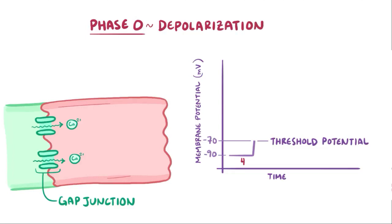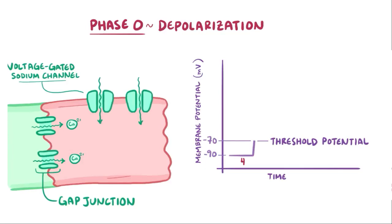Phase 0 is known as the depolarization phase. Basically, some voltage-gated sodium channels open up when they sense that the membrane potential is negative 70 millivolts, and they allow sodium to rush into the cell, creating an inward current. This rapid influx of sodium causes the myocyte's membrane potential to go all the way up to plus 20 millivolts.